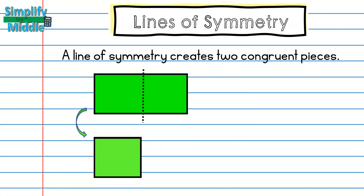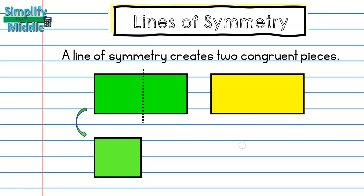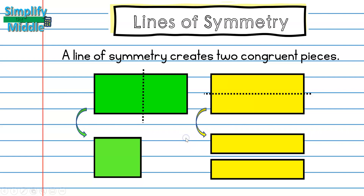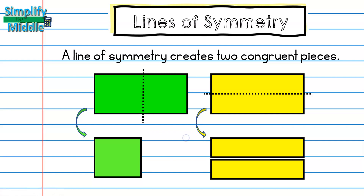Each of those pieces that were created are the same size and same shape, which makes them congruent. Here I have another example using the same rectangle — I noticed that I could also make a line of symmetry going from side to side. That would make the top and the bottom fold together, creating two pieces that meet and do not overlap.